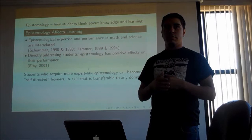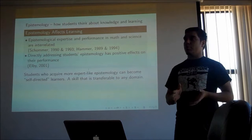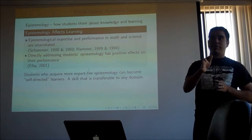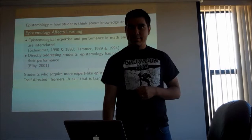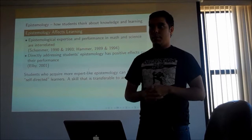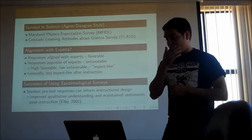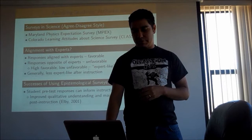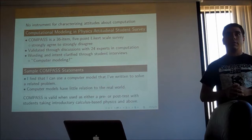The way we wanted to probe student motivation was by developing an instrument very similar to the CLASS. In fact, a lot of statements we drew from the CLASS and reframed in terms of computational modeling. This is what we're calling the COMPASS — 36 items, a five-point survey, very similar to the CLASS. We had experts come in and help with validation work. One issue was using the phrase 'computer modeling' — would students understand what that meant? When we invited students in and asked them to define computer modeling, almost all said 'writing a program to model something physically,' so we felt comfortable using that term.